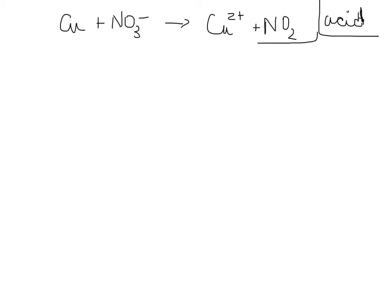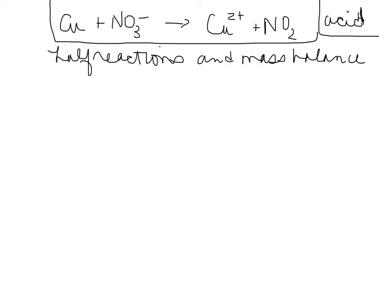Okay, so like before, we're going to break it down into the half reactions and look for mass balance. Half reactions and mass balance. Okay, and then we would write copper forms copper 2 plus, and then nitrate forms nitrogen dioxide. The coppers are balanced, the nitrogens are balanced, and the mass balance step is to balance for elements other than oxygen and hydrogen, so we're okay with the mass balance step.